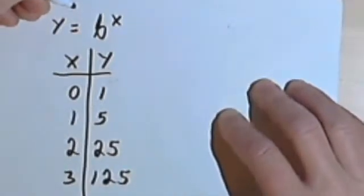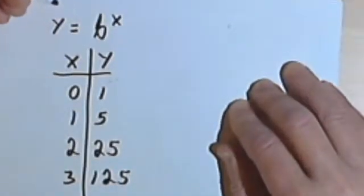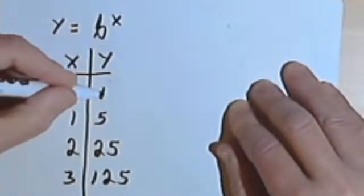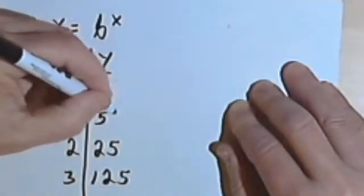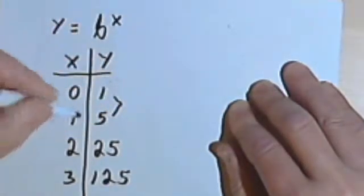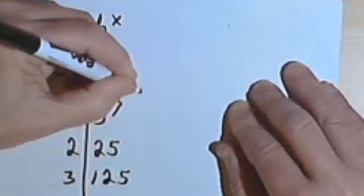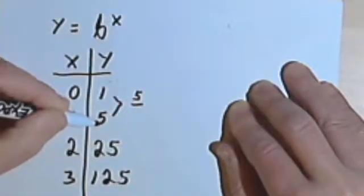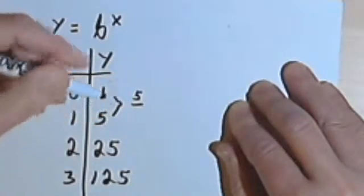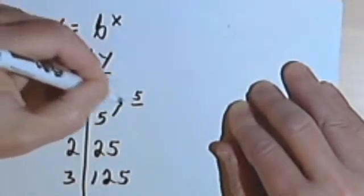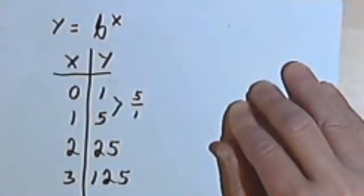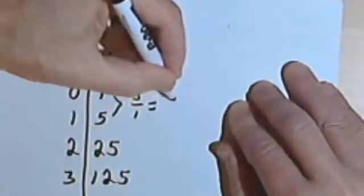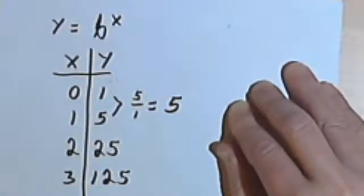But we've got an exponential function, so we shouldn't expect to find a common difference. What we're going to look for is something called the common ratio. Let's see how that works. Let's look at where I've got the 1 and the 5. What I want to do is look at the ratio, the fraction, that I can make. If I take the number that's further down on the list, the 5, make that a numerator, take the number just above it, the 1, and make that a denominator, and then find out what that equals. Well, 5 over 1 equals 5.